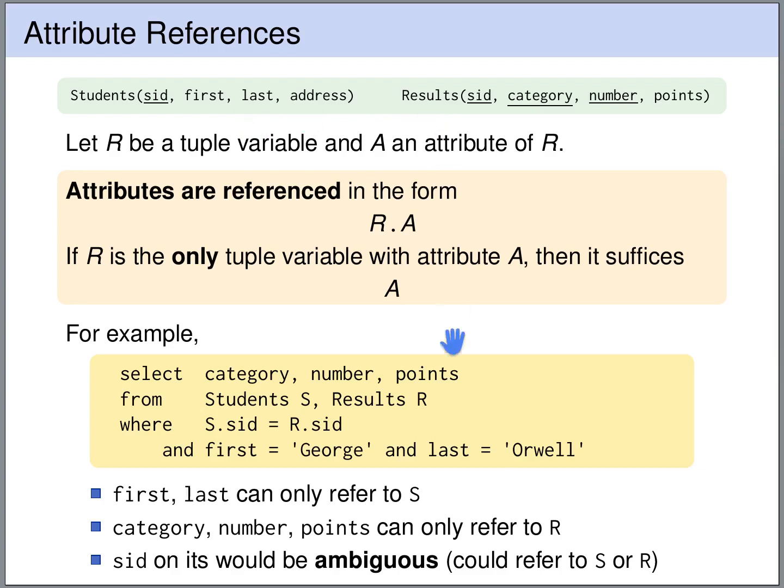However, for the attribute sid, we have to be explicit. Because sid appears both in the students and in the results table. So we have to explicitly write S.sid and R.sid in order to avoid ambiguity.